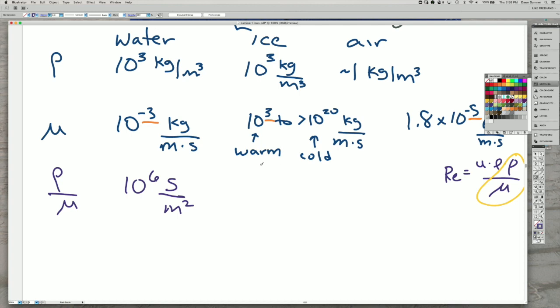We'll take the warmest ice, and you can see here that if we take the warmest ice, 10 to the 3 divided by 10 to the 3 is 1 per second per meter squared.